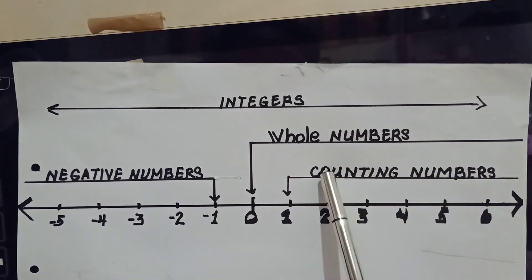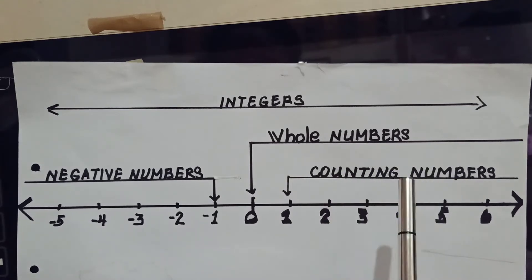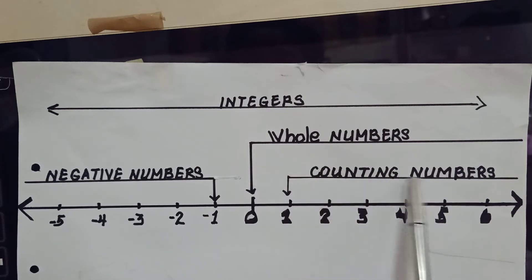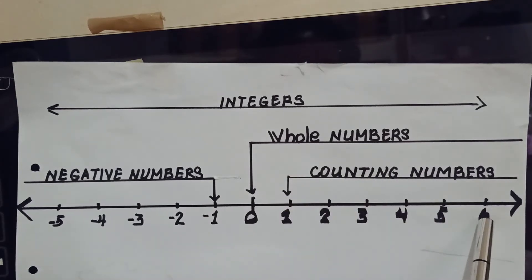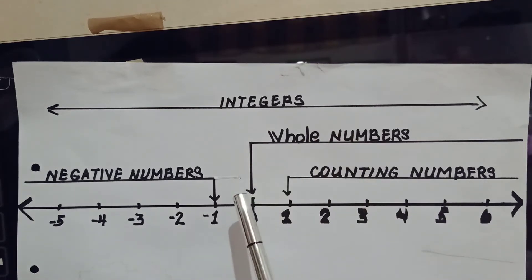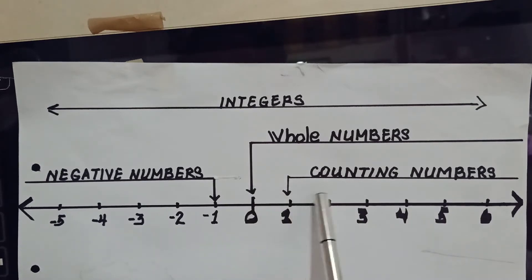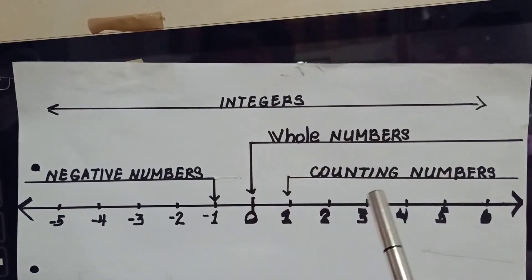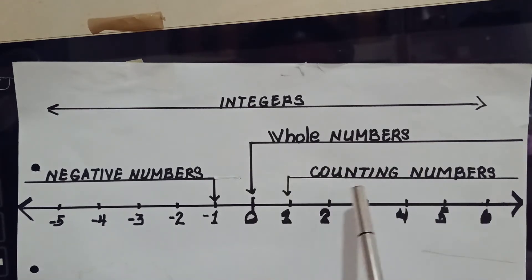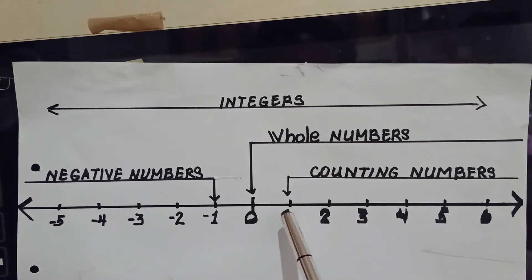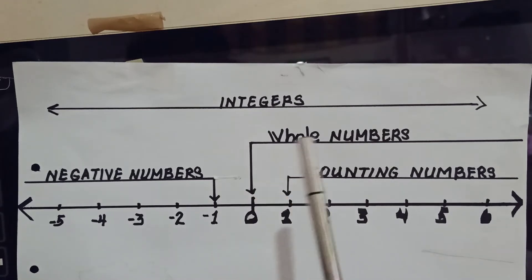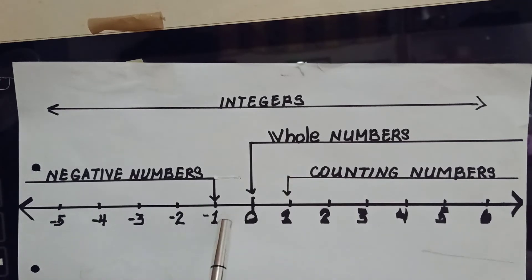Aside from considering them as positive or counting numbers, another name for them is natural numbers. Therefore, natural numbers, positive numbers, and counting numbers all refer to the same set of numbers. If we add 0 to the set of counting numbers, we now have another name for them — we call them whole numbers. With the presence of 0, the set of numbers is now considered whole, meaning these numbers start from 0.